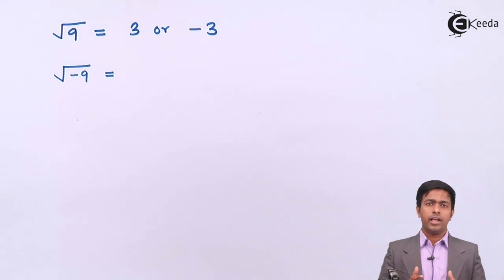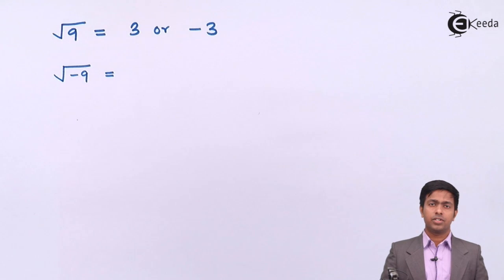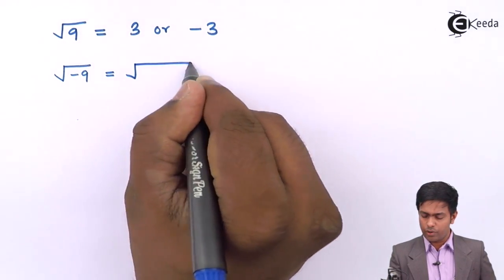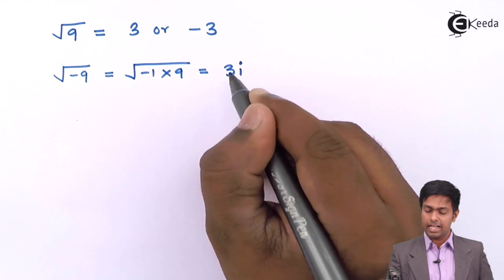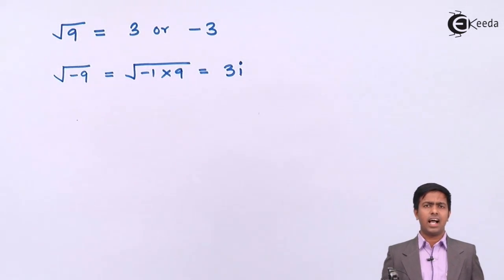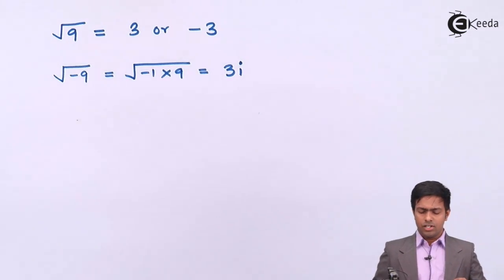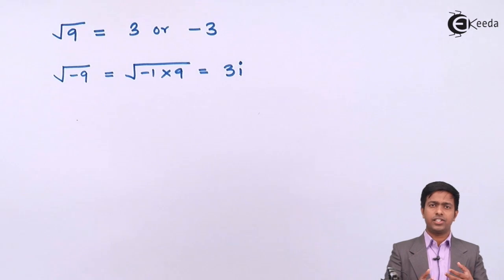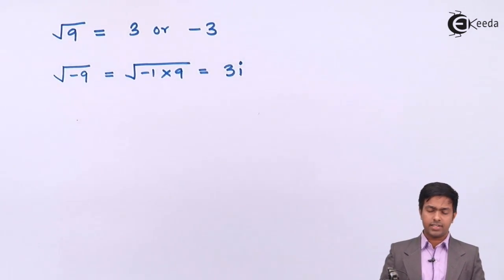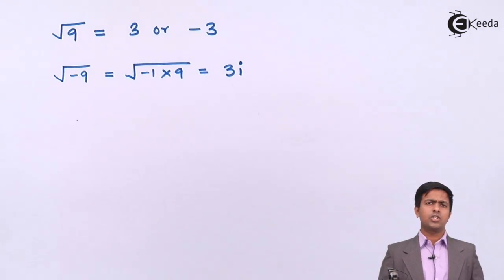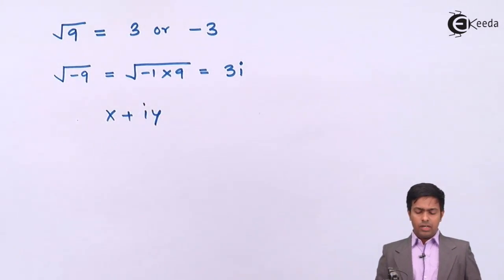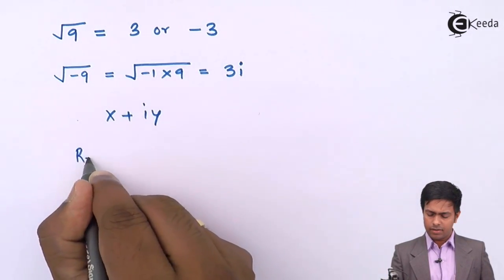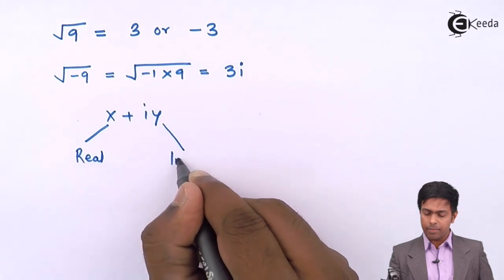We can find the square root of a negative number with the help of complex numbers. If I want to find the square root of negative 9, I write it as square root of minus 1 times 9, which gives 3 times square root of minus 1 — and square root of minus 1 is denoted as i. A complex number is any number given in the form x plus iy, where x is called the real part and iy is called the imaginary part.